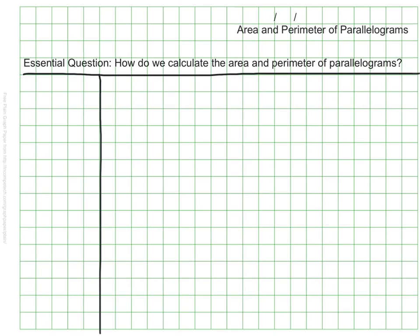We have worked a little bit with parallelograms. Remember that a parallelogram is a type of quadrilateral, meaning it has four sides, and two sets of those sides are each parallel. In addition to that, the sides are also congruent, meaning that the sides that are parallel are also the same length.